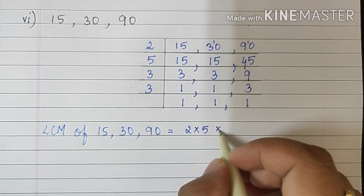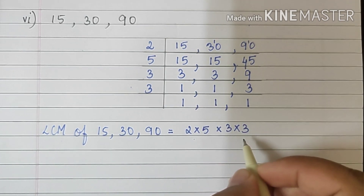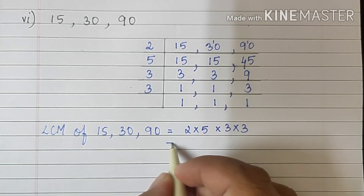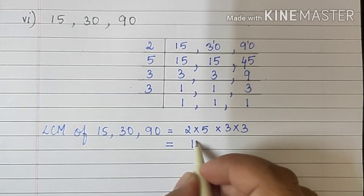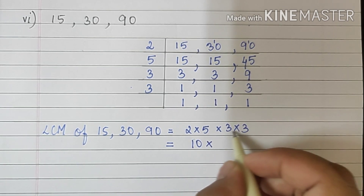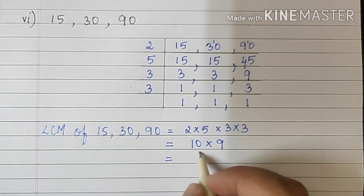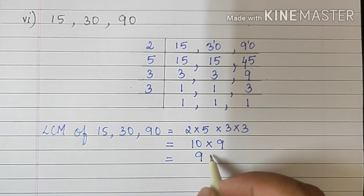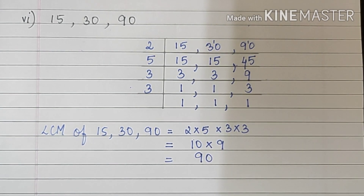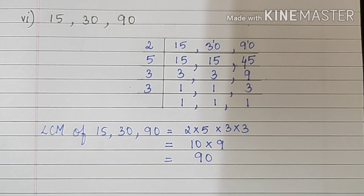2 multiplied by 5 multiplied by 3 multiplied by 3. 2 5s are 10, multiplied by 3, 3s are 9, which is 90. So the LCM of 15, 30 and 90 is the number 90.